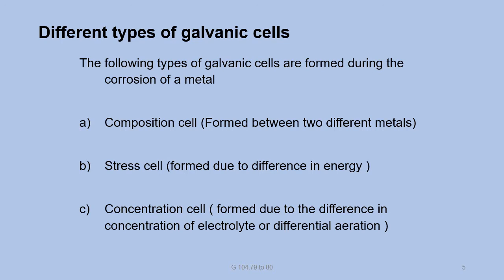Now we discuss different types of galvanic cells. Some galvanic cells are formed during the corrosion of a metal. According to that, these cells are divided into three types: one is the composition cell, another is the stress cell, and the third is the concentration cell.